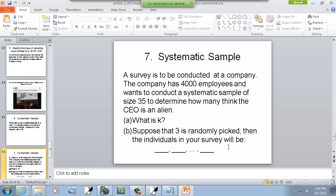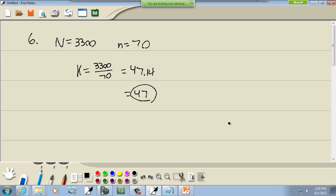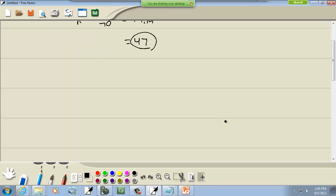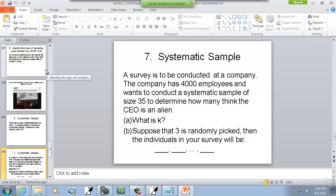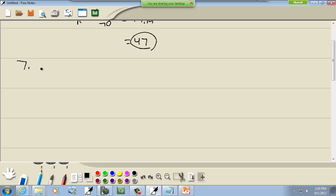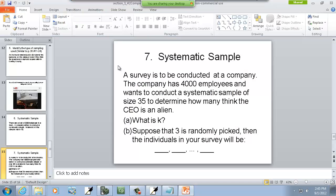Okay. Another example. Surveys to be conducted to the company. Let's go down a little bit. The company has 4,000 employees. Want to conduct a systematic sample of size 35. Determine how many think the CEO is an alien. Okay. So our capital N is 4,000. The sample size, they want to be 35.